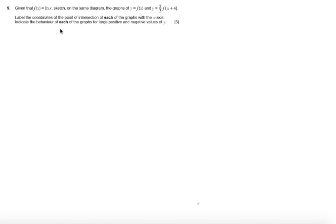Label the coordinates of each point of intersection of each of the graphs with the x-axis. Indicate the behaviour of each of the graphs for large positive and negative values of y.